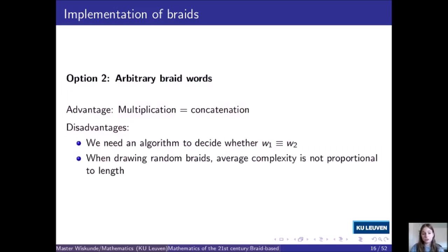We call a sequence of the form where k is an integer and b₁ up to bᵣ are simple braids distinct from 1 and Δₙ, a normal sequence, if for each i the braid bᵢ is the maximal simple left divisor of the corresponding product. Every n-braid admits a unique decomposition of this form such that the corresponding sequence is normal. We call this the normal form of the braid, and we call r the complexity, k the infimum, and k+r the supremum. A big advantage of using normal braid words is that checking equivalence becomes trivial, but multiplication is more difficult since the time cost of computing the normal form is quadratic in the length of the braid word.